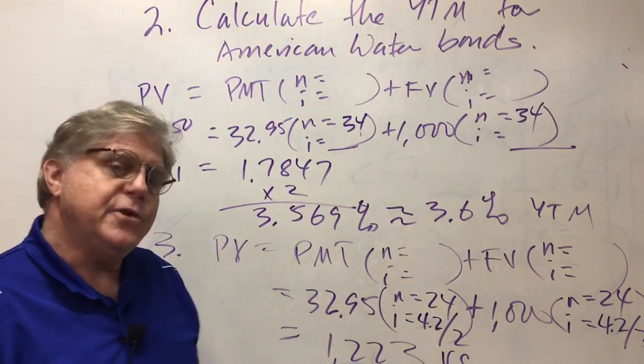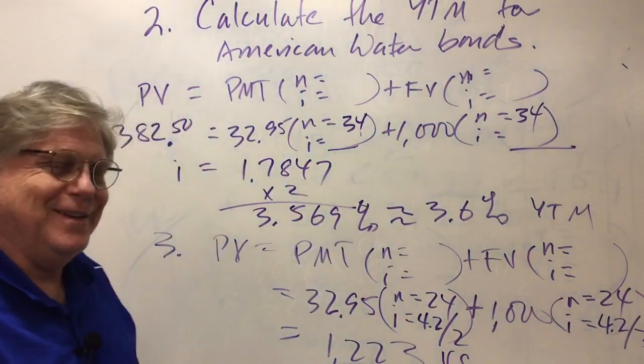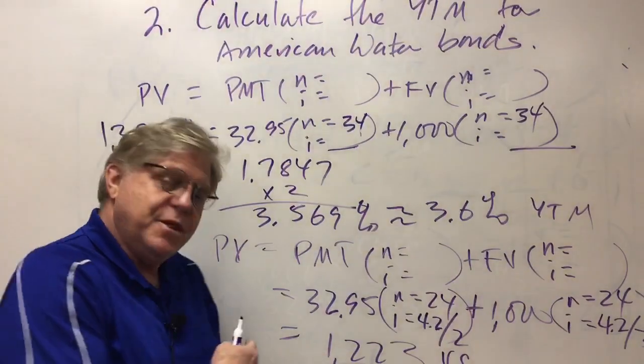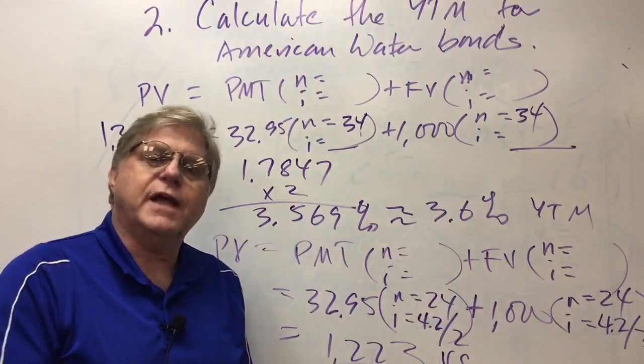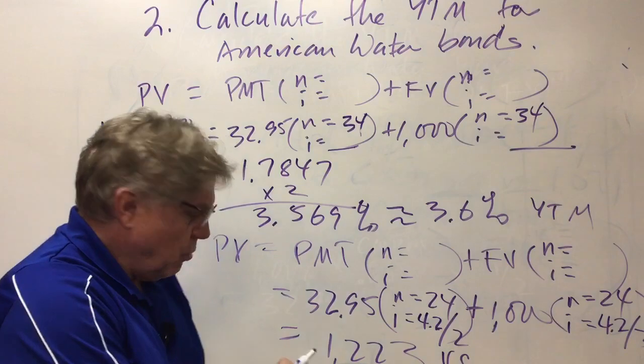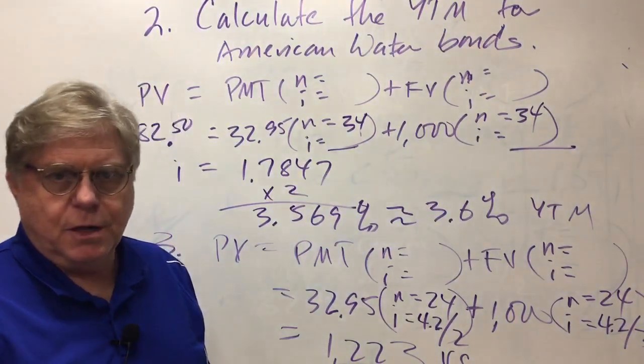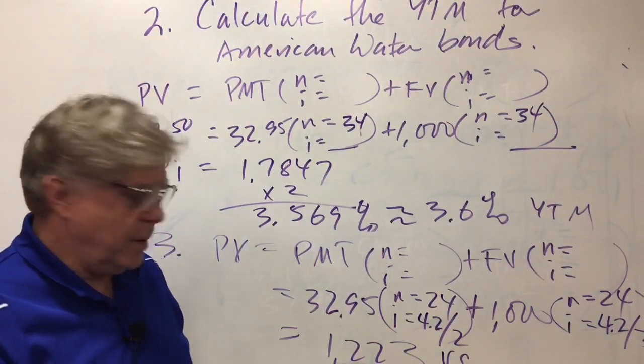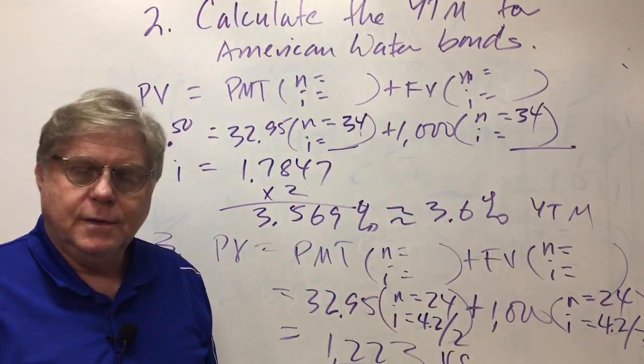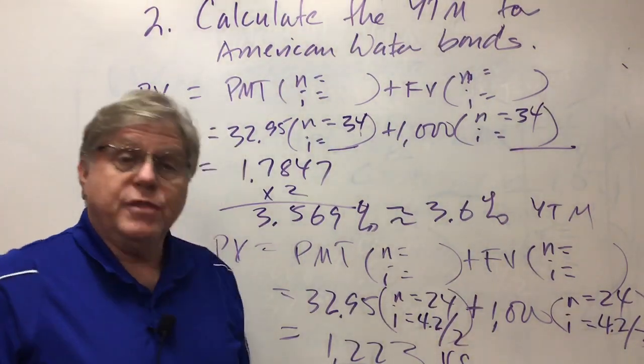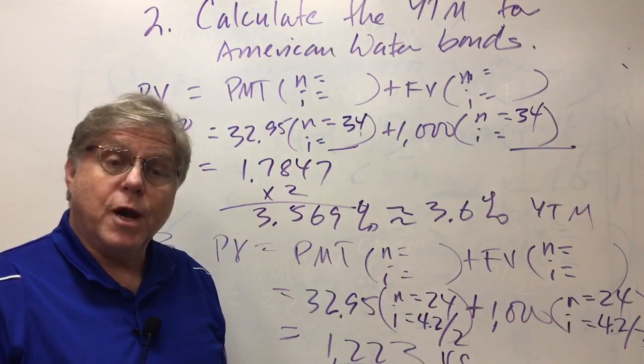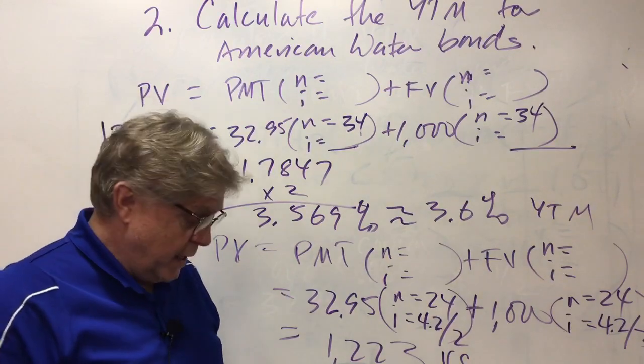Let's review this. Bond values are quoted as a percentage of par. What would be the quoted price for this bond if it's selling for $1,223.48? The answer is it would be 122.3 percent of the thousand dollar par value.